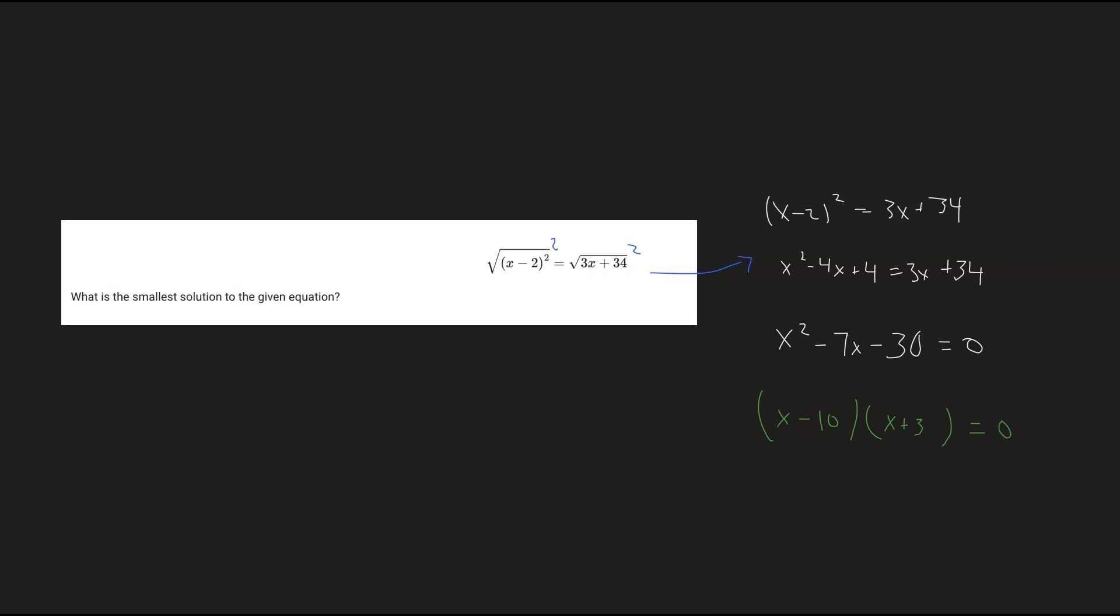Now we want to solve for the x values, so we're going to set both of these equal to 0. We have x minus 10 equals 0, and x plus 3 equals 0. So we can find that x equals positive 10, and x equals negative 3.